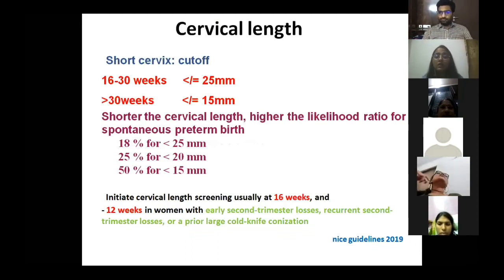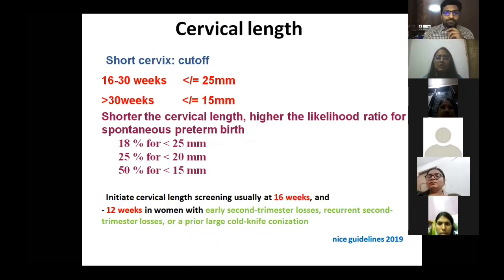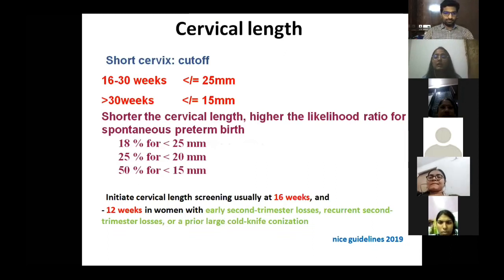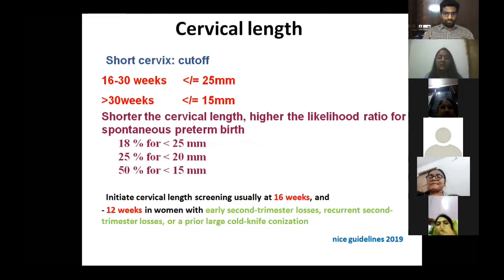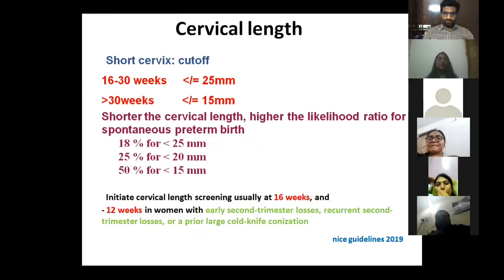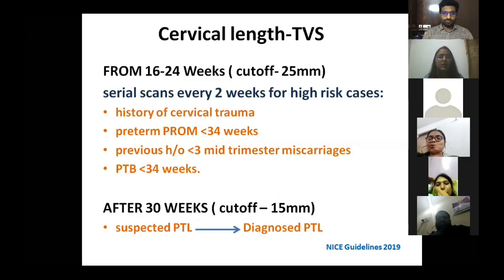A short cervix is defined as less than 25 mm from 16 to 30 weeks, and less than 15 mm after 30 weeks. The shorter the cervical length, the higher the likelihood ratio for spontaneous preterm birth. Normal screening starts at 12 weeks when there is early second trimester loss, recurrent second trimester losses, or prior large cone or LLETZ conization.